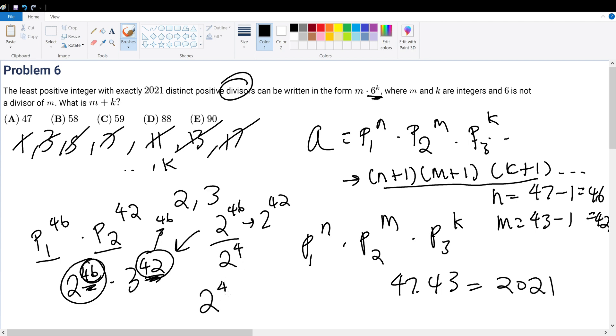That means it's 2 to the 42nd times 3 to the 42nd times 2 to the 4th. This combines to be 6 to the 42nd, which is our k value, and 2 to the 4th becomes our m value, which is equal to 16. So 42 plus 16 gives 58, bringing us answer choice B.